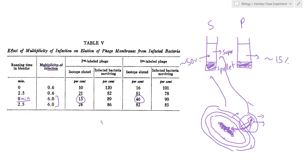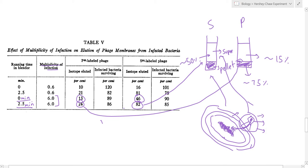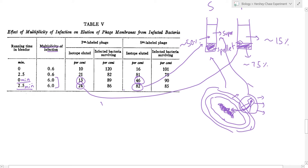And this is exactly what they found especially after running it in a blender for two and a half minutes because that caused even more of the protein coats to detach due to the forces. And we found that around 82% of the sulfur was present radioactivity wise in the supernatant whereas only 24% of the phosphorus was there in the supernatant, around 75% of it being in the pellets. This was the evidence that they needed to prove that DNA is the genetic material of the cell.